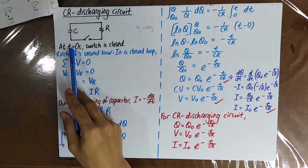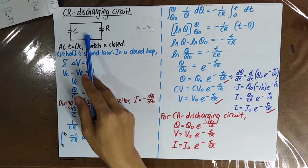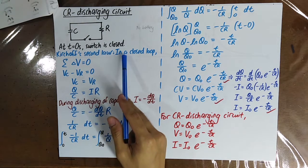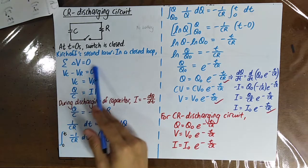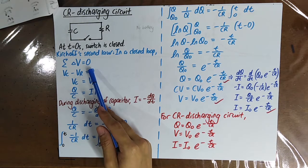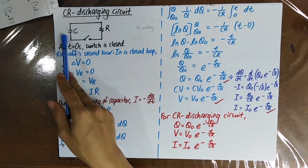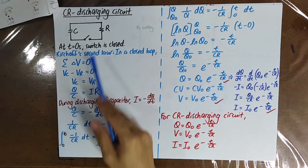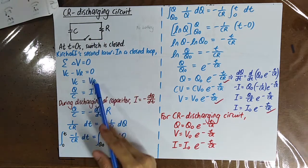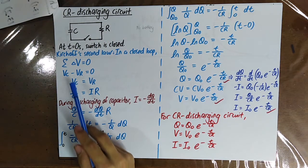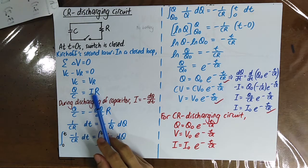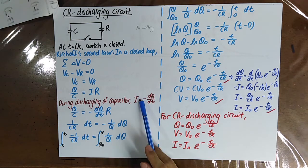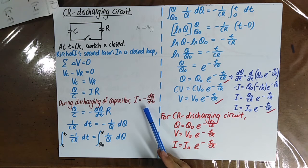When time equals zero, you close the switch. Kirchhoff's second law states that inside a closed loop, the summation of the potential change should be equal to zero. So the potential difference across the capacitor VC should be equal to the potential difference across the resistor VR. VC equals Q over C, and VR equals IR. During discharging of the capacitor, I equals negative DQ over DT.